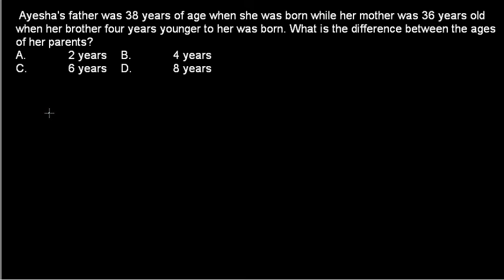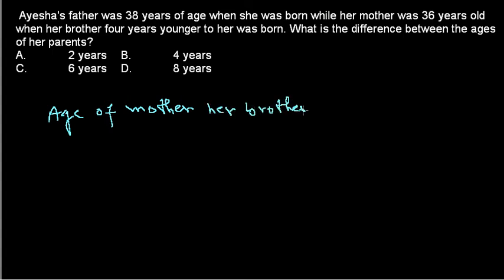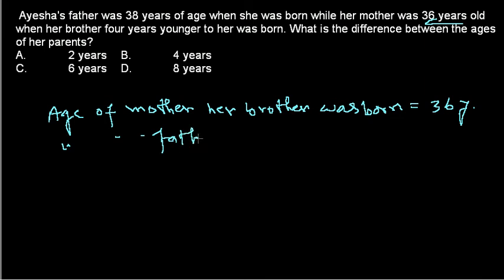The age of Aisha's mother when her brother was born equals 36 years — that is directly provided, no problem about that. Now we need to find the age of her father when her brother was born. The age of her father when Aisha was born was 38, but that is with respect to Aisha's birth, and we are finding it for the brother's birth.